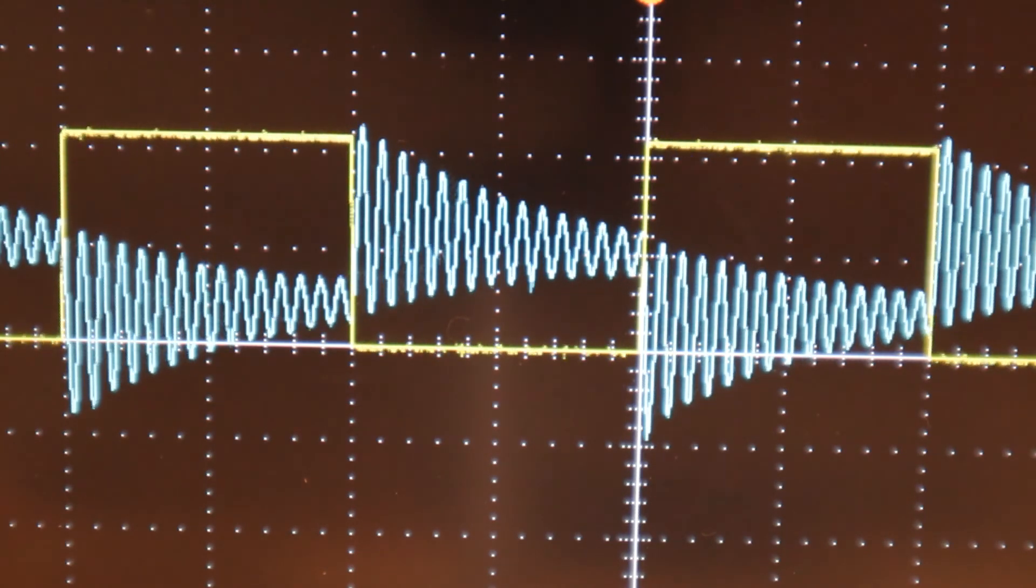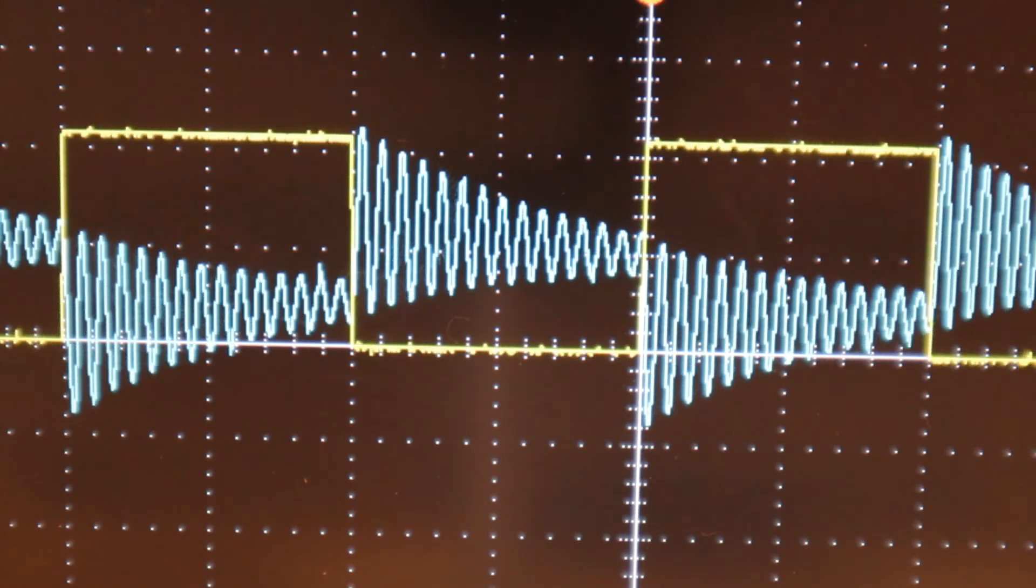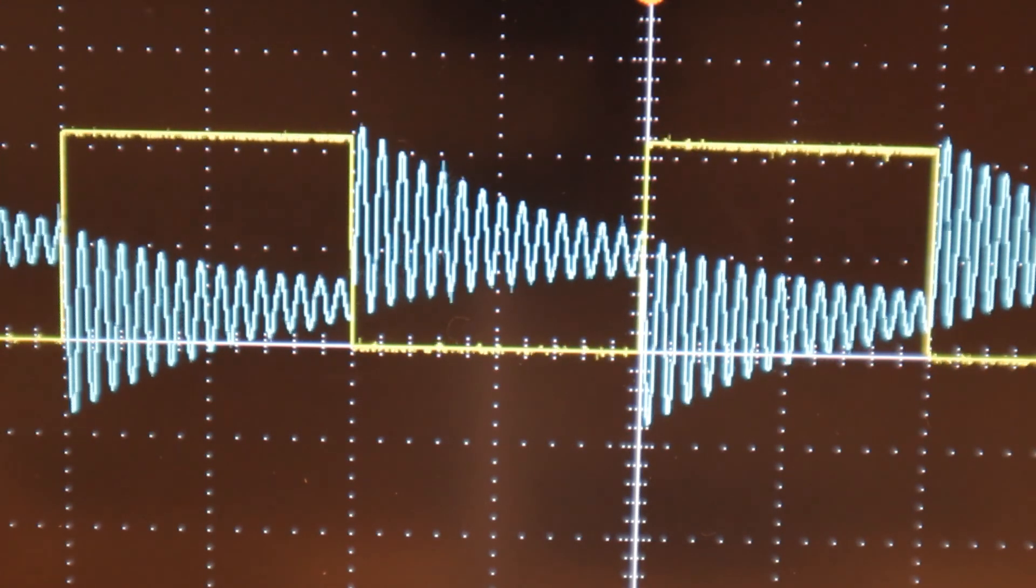That being said, notice that when the square wave goes low, there is no current flowing through the first ghillie coil. The LC portion of the circuit continues to oscillate without any outside power source.